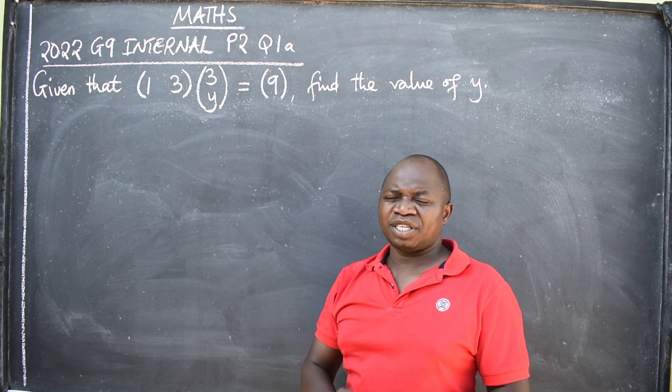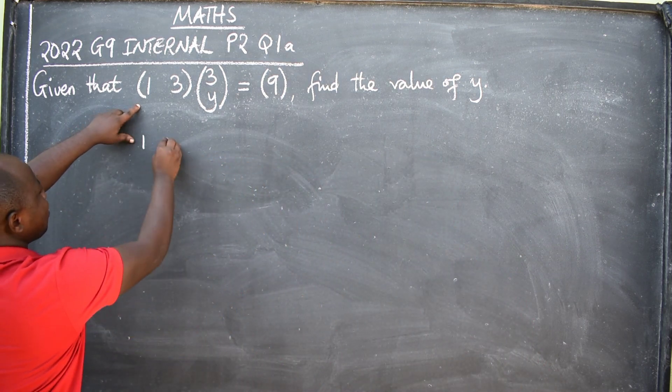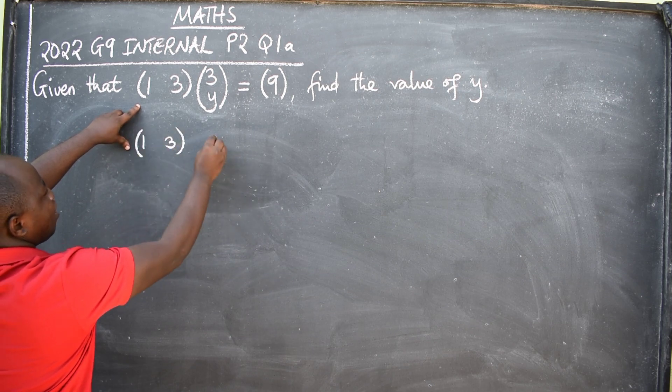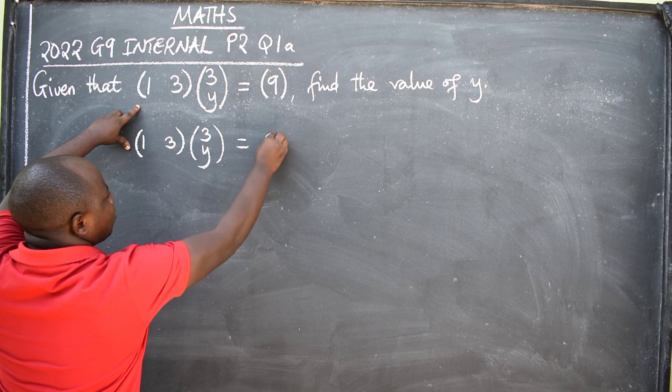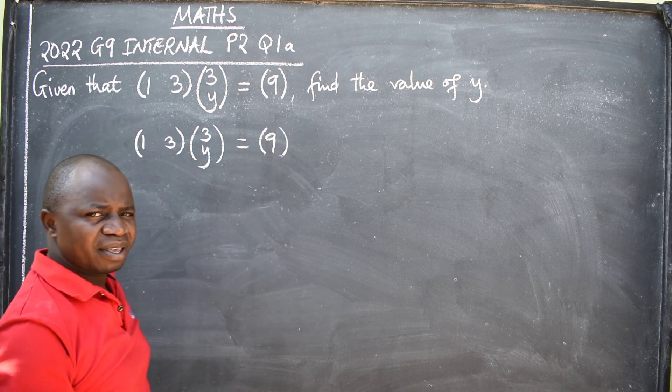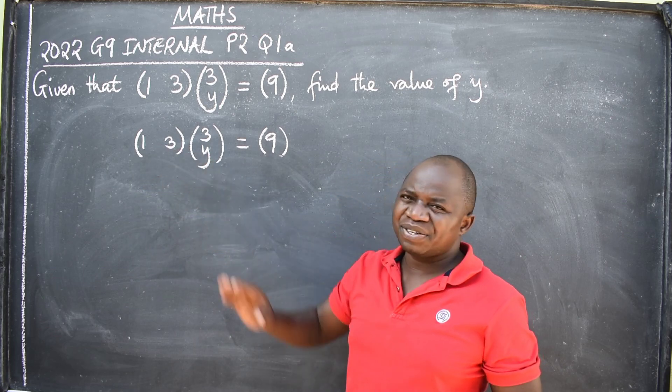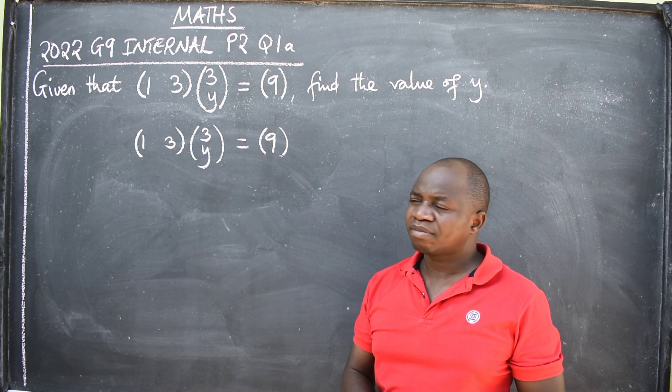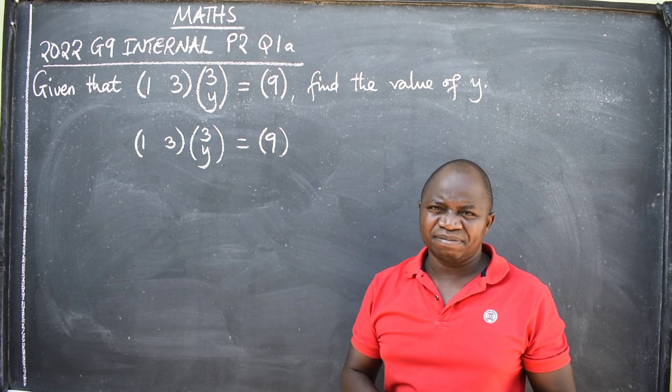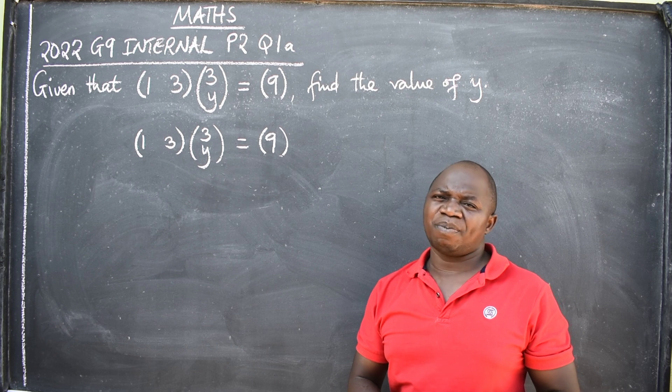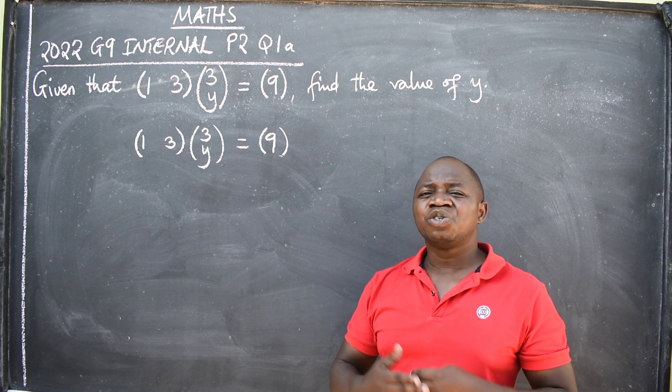Where do you start from? Copy the question. First, (1 3)(3 y) is equal to matrix (9). Now, look at the two matrices that have been given. In between the two matrices, there is no sign. What should come into your mind if there is no sign? They are asking you to multiply.